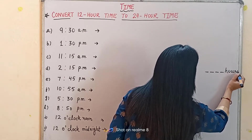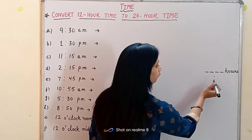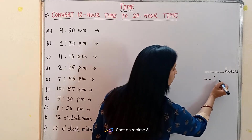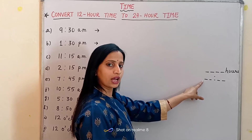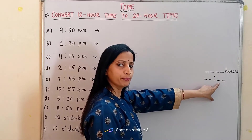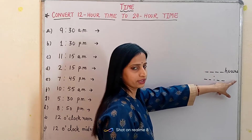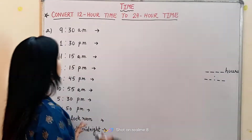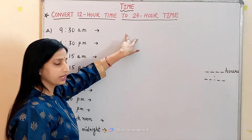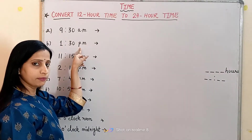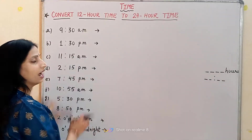There is another way also. We can write the 24-hour time by using colons — before the colon there will be 2 digits, and after the colon there will be 2 digits. The digits before the colon tell us the hours, and the digits after the colon tell us the minutes. In this format we will not write 'hours' after the time. Now, whenever there is AM, there will be no change in the time. And whenever there is PM, we will add 12 to the hours.